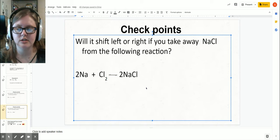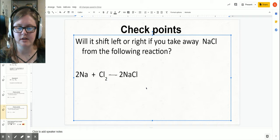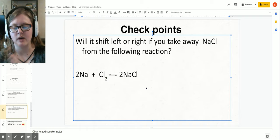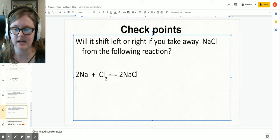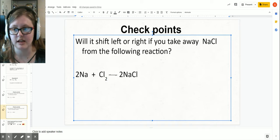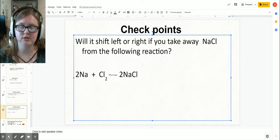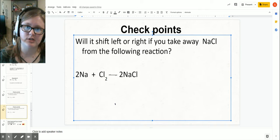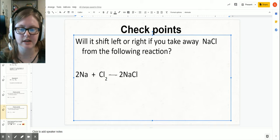The key thing to understand is if you increase the amount of something—either product or reactant—it'll shift away. If you increase the left side, it'll shift to the right; if you increase the right side, it'll shift to the left. If you decrease or remove a reactant or product, it wants to shift towards. If you remove something from the left side, it'll shift to the left; if you remove from the right, it shifts to the right.